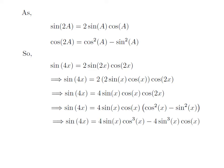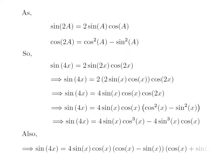Further expanding the above expression, we get sin of 4x is equal to 4 times sin of x into cosine of x. We can also express the above expression in a factorized form. Since cos squared x minus sin squared x is in the form of a squared minus b squared, which factors as a plus b into a minus b, we get sin of 4x is equal to 4 times sin of x into cosine of x into cosine of x minus sin of x into cosine of x plus sin of x.